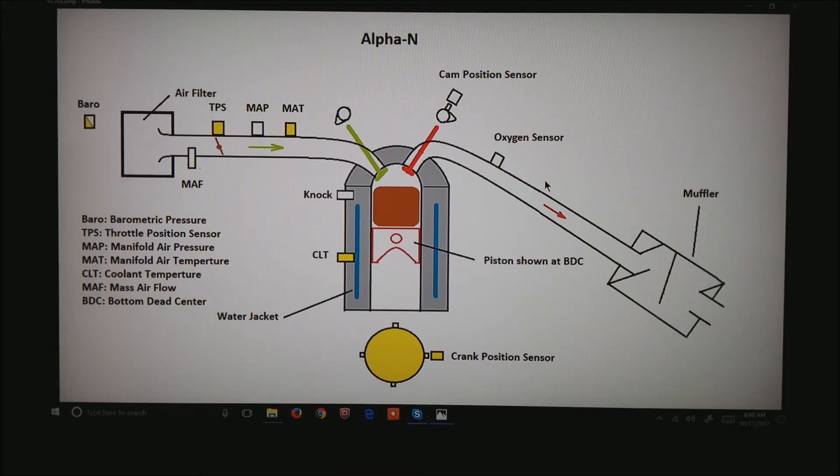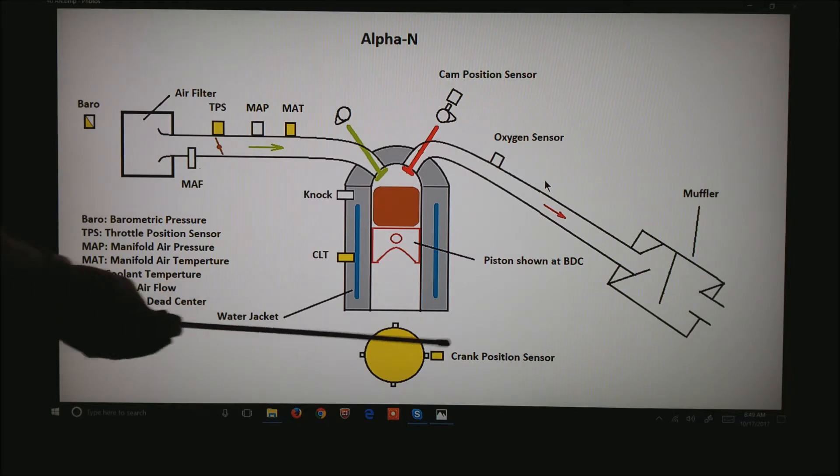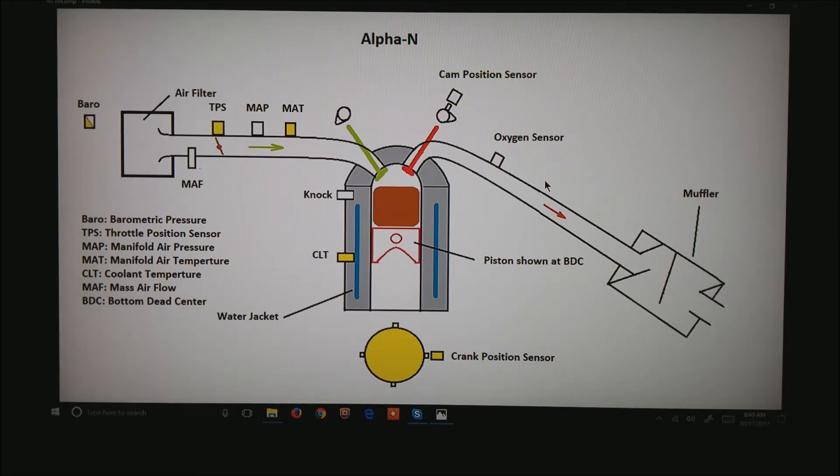Notice that with this method there are two extremely critical sensors. The TPS, if this goes down we have no way to calculate how much fuel to bring in, and the crank position sensor. You have to know how fast the motor is spinning.